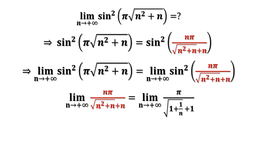We divide both the numerator and the denominator by n. The numerator becomes pi. For the denominator, we move n inside the square root as n squared: n squared divided by n squared equals 1, and n divided by n squared equals 1 over n. The outside n divided by n is 1. As n goes to infinity, 1 over n goes to 0, so the denominator goes to 1 plus 1, which is 2.